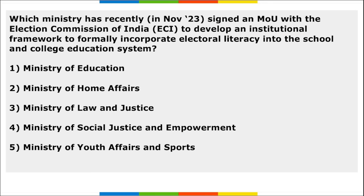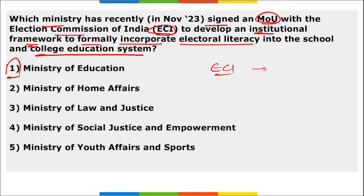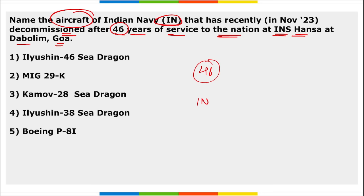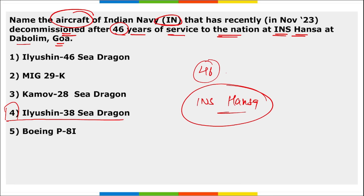The Ministry of Education recently signed an MoU with the Election Commission of India to incorporate electoral literacy into school and college education. Election Commission also appointed two national icons — Sachin Tendulkar and Rajkumar Rao — for three years to promote voter awareness. The aircraft Ilyushin 38C Dragon, a long-range maritime patrol aircraft of the Indian Navy, was decommissioned after 46 years of service at INS Hansa, Dabolim, Goa.